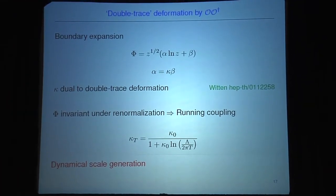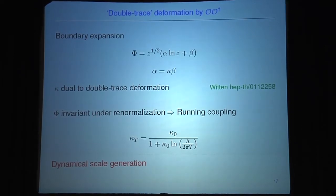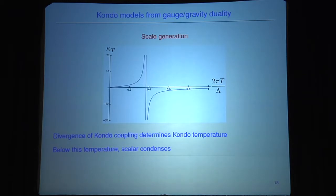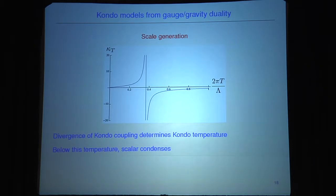This makes the model comparable to QCD. Plotting this coupling, we see a divergence: this is the renormalization scale vs. the Kondo coupling, and precisely this divergence determines the Kondo temperature below which the coupling to the impurity is strong. Below this temperature the scalar condenses, so this temperature sets precisely the scale where our holographic superconductor kicks in.